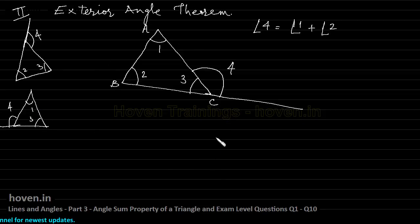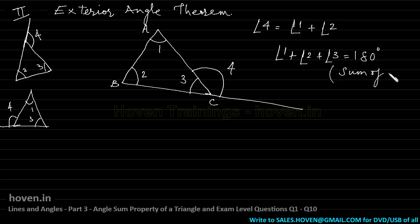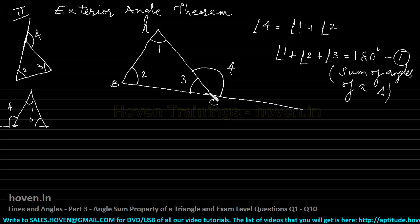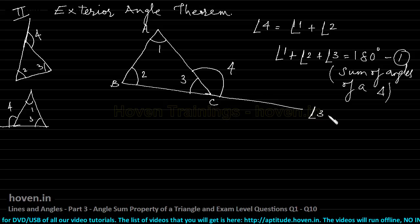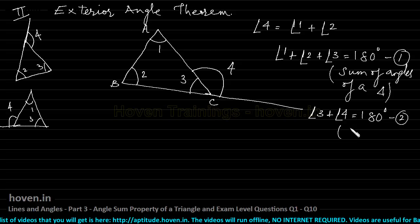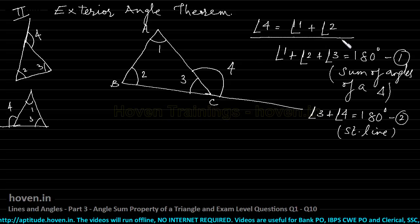Let us now set out to prove this theorem. We already have angle 1 plus angle 2 plus angle 3 equal to 180 degrees — the reason being the sum of angles of a triangle. So this is one equation that we have. The second equation is: since this is a straight line, angle 3 and angle 4 should add to 180 degrees. So we have angle 3 plus angle 4 equal to 180 degrees. This is equation 2, and the reason is it forms a straight line. We have to prove that angle 4 equals the sum of the opposite angles, and we observe that angle 3 is not in the target equation.